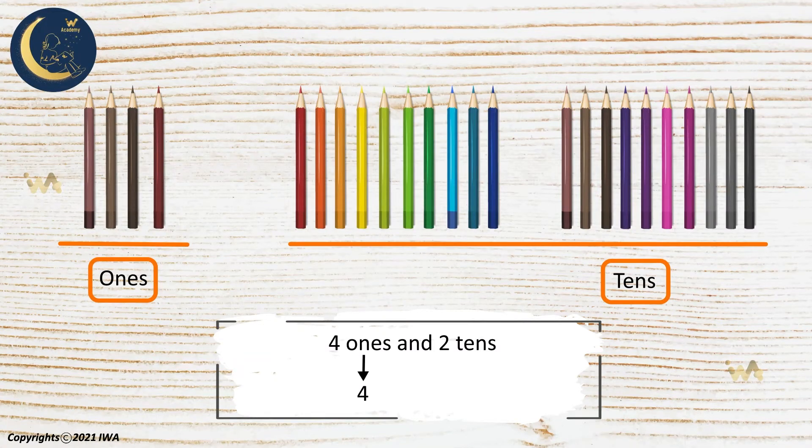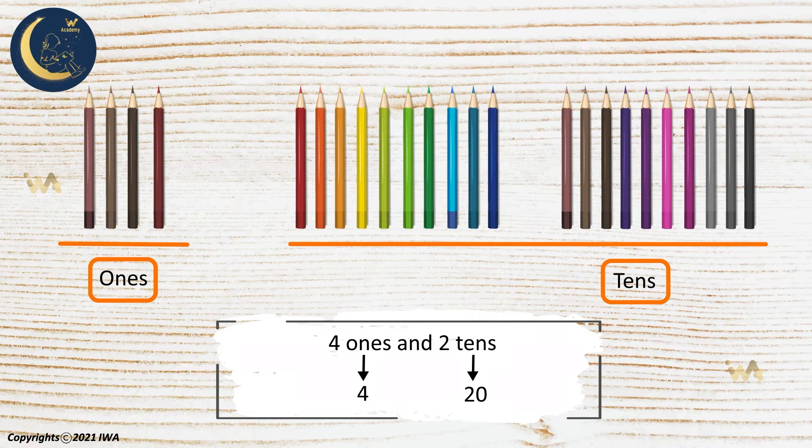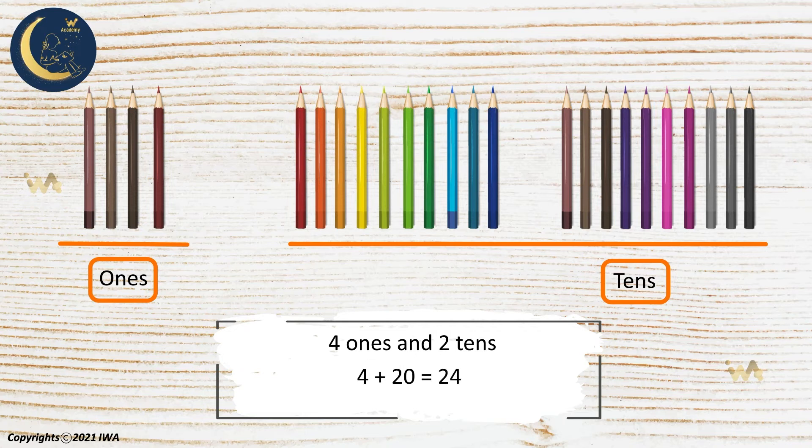Meanwhile, the number two, as in two tens, stands for 20 pencils. We call the number four and the number 20 the place value of numbers. So we can say that four plus 20 equals 24.